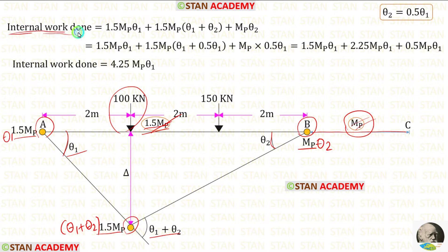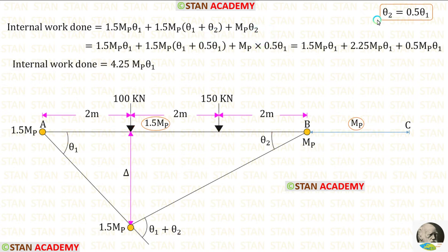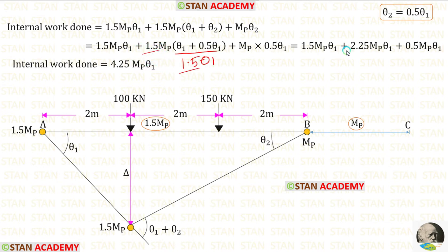To find the internal work done, we add these three terms. Substituting theta 2 as 0.5 theta 1, we get theta 1 plus 0.5 theta 1 equals 1.5 theta 1. 1.5 multiplied by 1.5 gives 2.25. After adding all three values, we are getting the internal work done equal to 4.25 Mb theta 1.